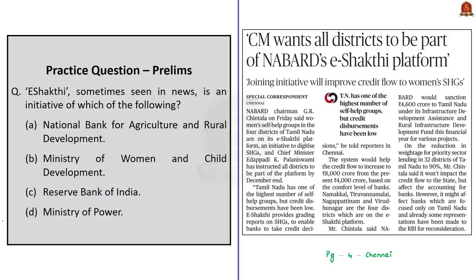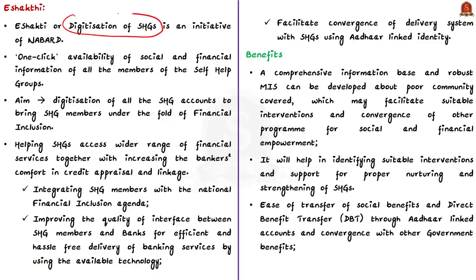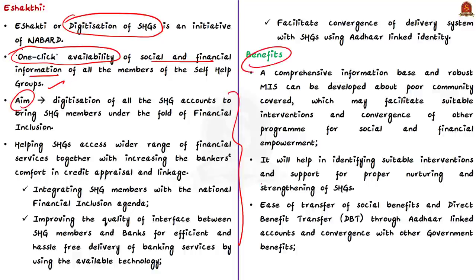E-Shakti, sometimes seen in news, is an initiative of which of the following? The correct answer is option A, National Bank for Agriculture and Rural Development, in short NABARD. The news is that the Chief Minister of Tamil Nadu wants all districts to be a part of NABARD's E-Shakti platform. E-Shakti is basically an initiative to digitize self-help groups across India, so that within one click, the social and financial information of all members of self-help groups will be available. One of the main benefits is that it will ease the transfer of social benefits and direct benefit transfers through linked accounts, making all self-help group accounts financially inclusive.